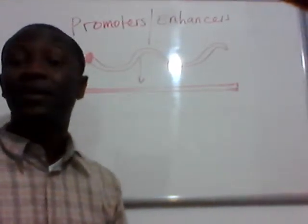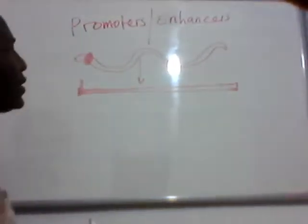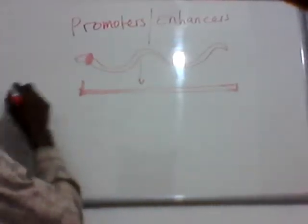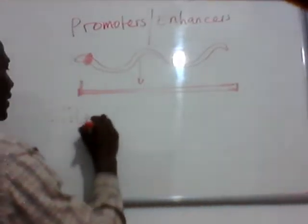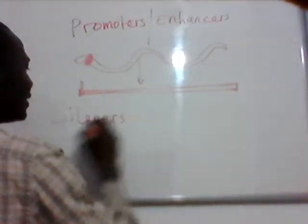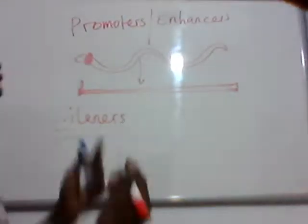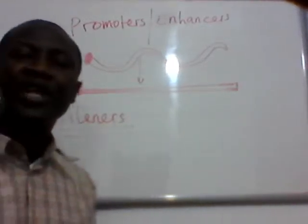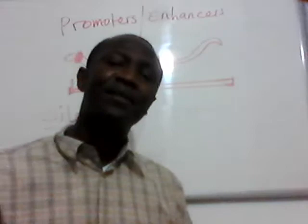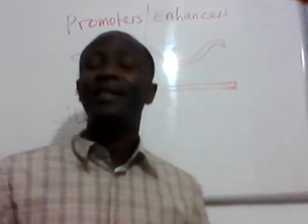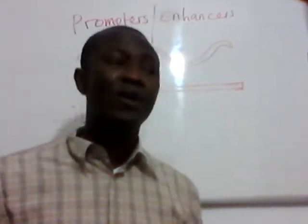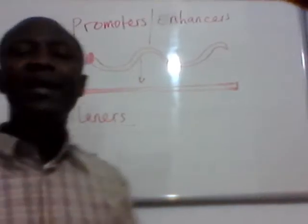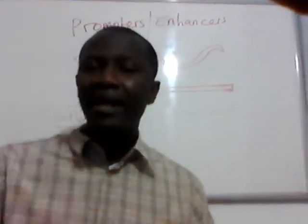The second aspect is the reverse of enhancers — we call them silencers. Just like promoters, the name explains it: when you have a silencer on your gene, it reduces the rate of transcription or can even prevent transcription of your gene because of some regulatory mechanisms.